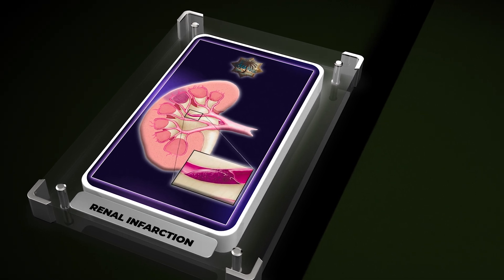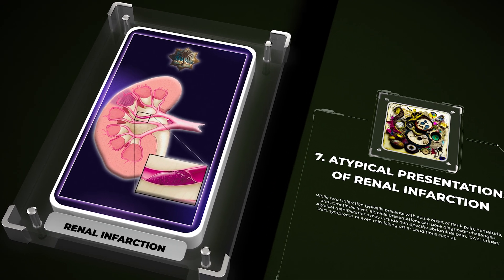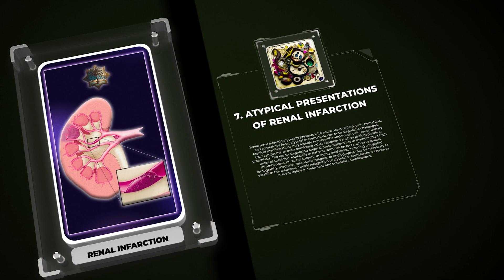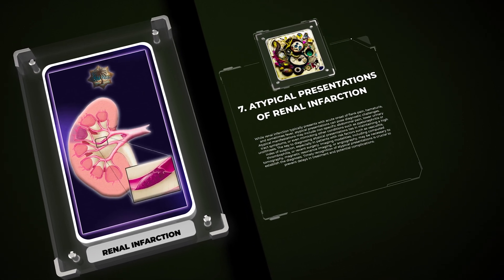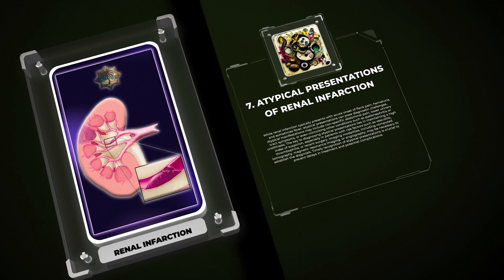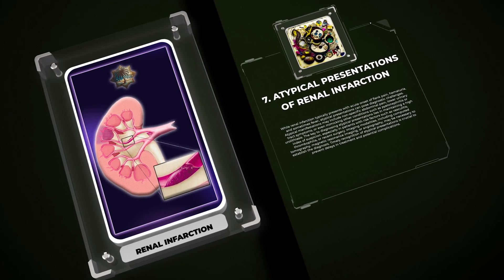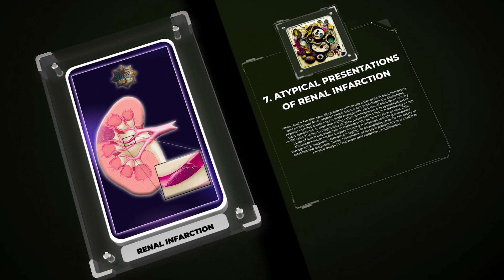Understanding the underlying mechanisms of AKI and renal infarction is essential in tailoring management strategies to each individual patient. While renal infarction typically presents with acute onset of flank pain, hematuria, and sometimes fever, atypical presentations can pose diagnostic challenges. Atypical manifestations may include non-specific abdominal pain, lower urinary tract symptoms, or even mimicking conditions such as pyelonephritis or urolithiasis. Imaging modalities including CT, MRI, or angiography may be necessary to establish the diagnosis.